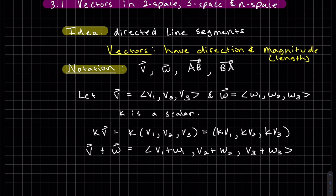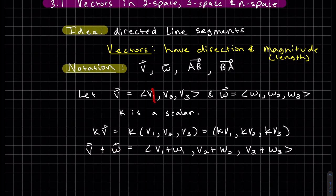When we add two vectors, we add component by component. First components, second components, third components.